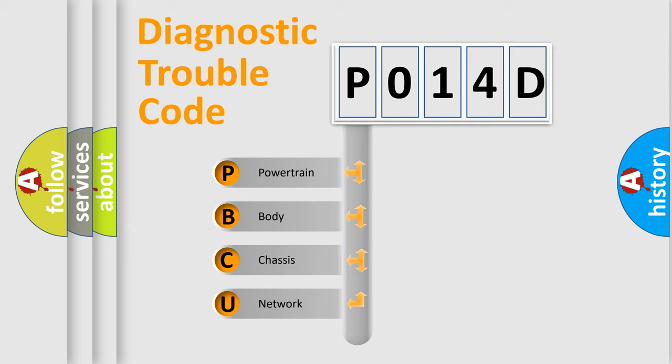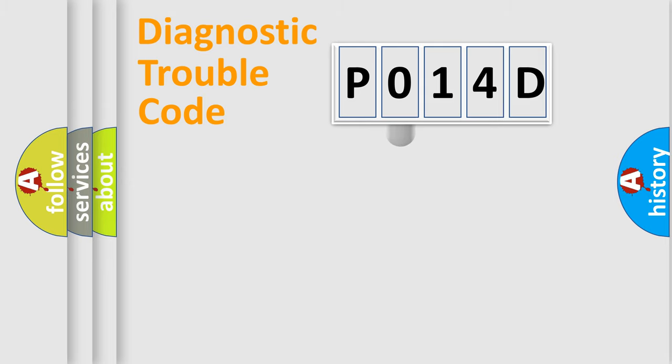We divide the electric system of automobile into the four basic units: Powertrain, Body, Chassis, Network. This distribution is defined in the first character code.